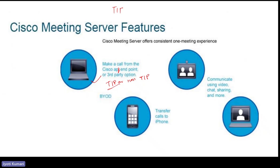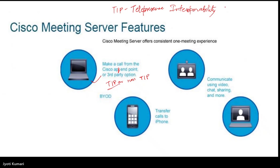TIP — Telepresence Interoperability Protocol — is a protocol for telepresence endpoints, similar to SIP for standard endpoints. TIP endpoints as well as non-TIP endpoints are supported to make calls. So you can use either the Cisco Meeting App on a physical endpoint, a third-party application, or TIP and non-TIP devices.